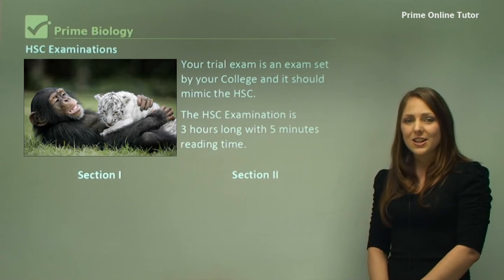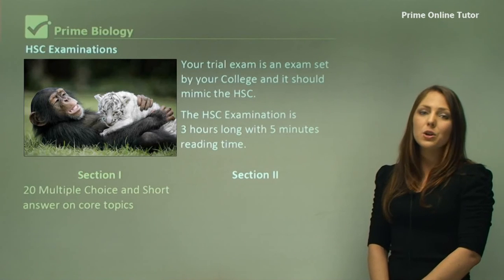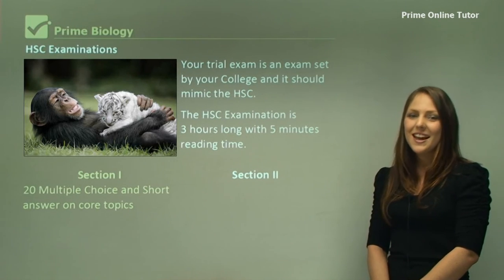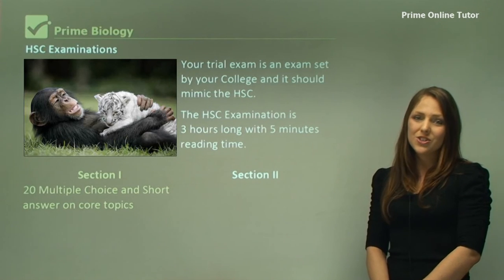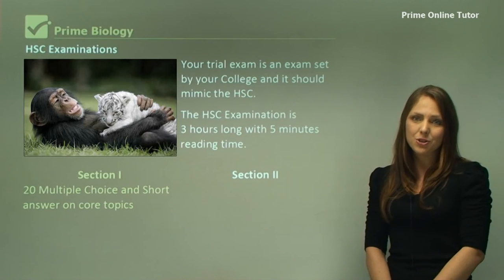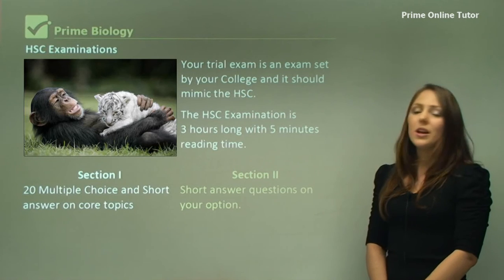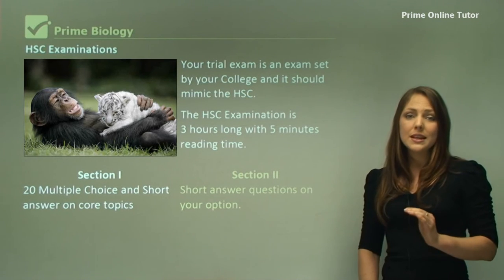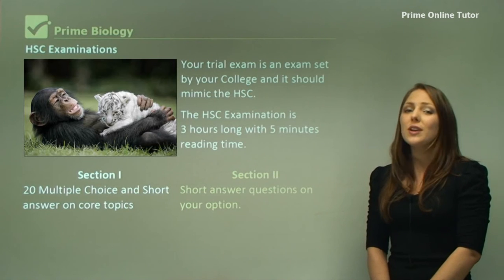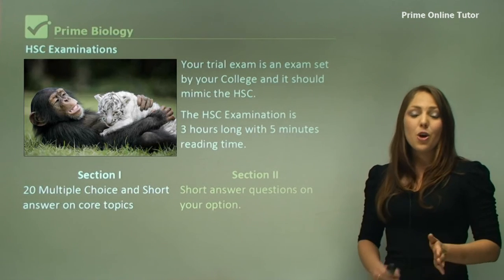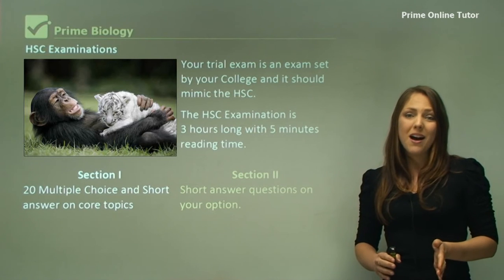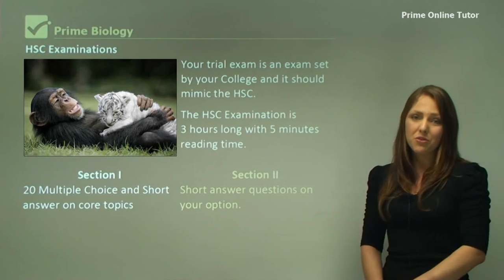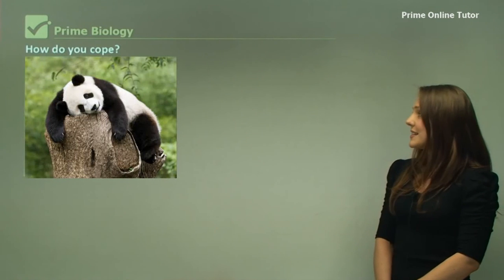There are two sections in the HSC. Section one includes 20 multiple choice questions and also short answer questions covering all of your core topics. In section two, you answer short answer questions on the topic that you chose in class only. You don't answer all of the questions, because only the first one will ever be marked — so you could lose a lot of marks if you answer the wrong topic.